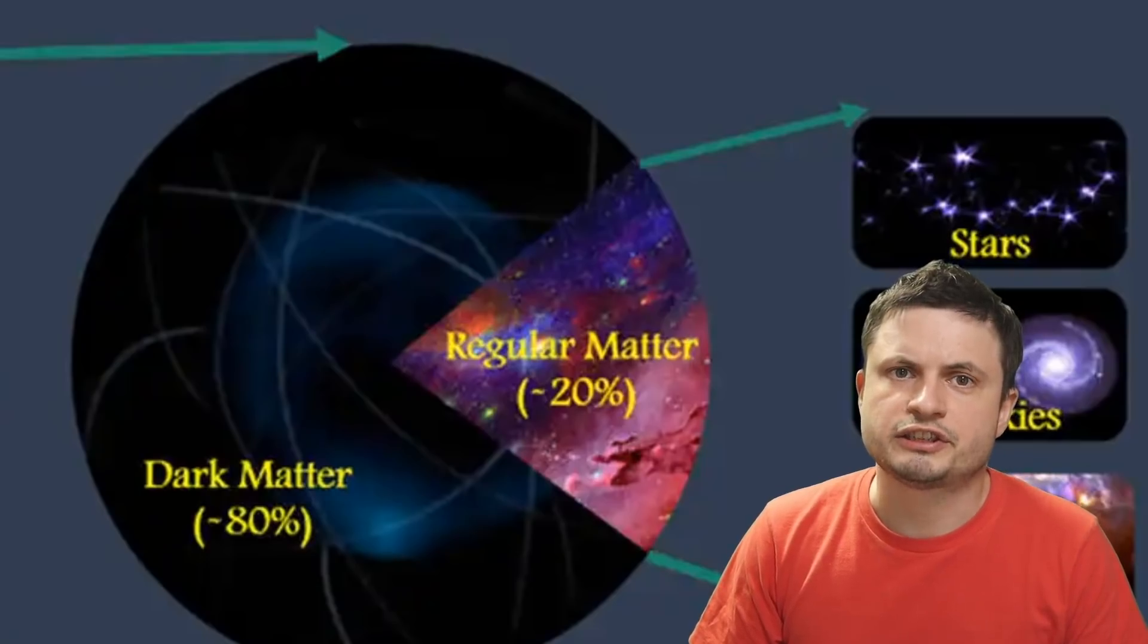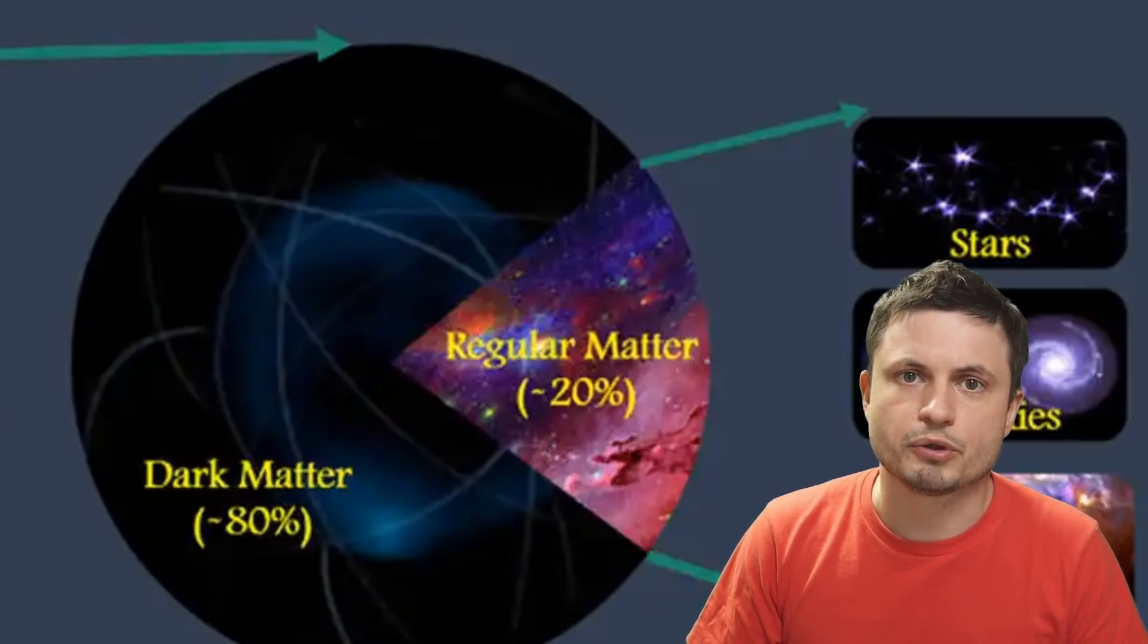Because about 40% of all of the stuff that should be there is missing. And this problem has been known to scientists for a pretty long time. And that's essentially what we refer to as the missing baryon problem, where about half of this stuff is completely invisible to us.